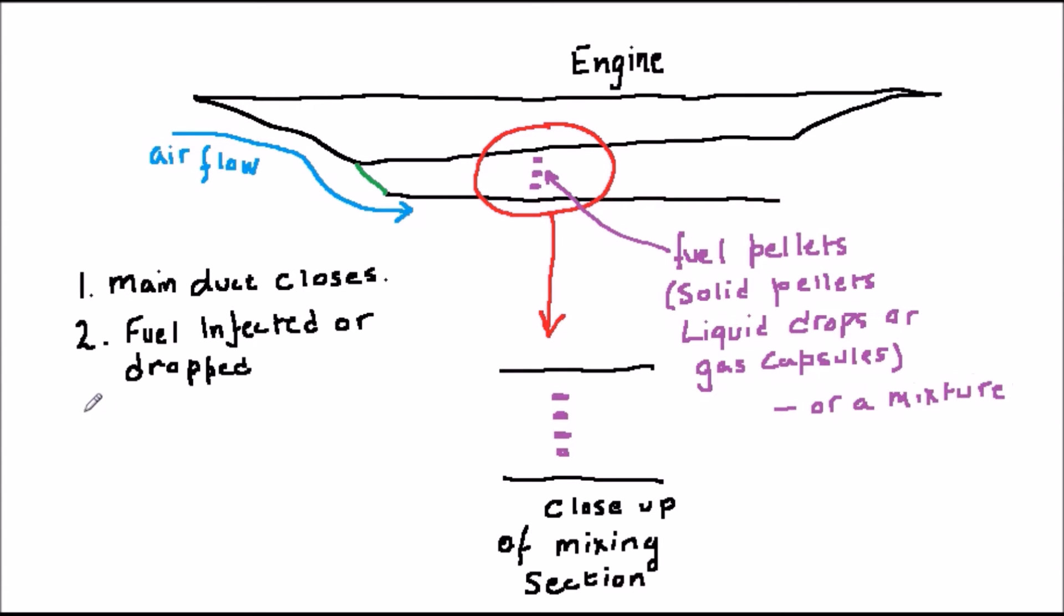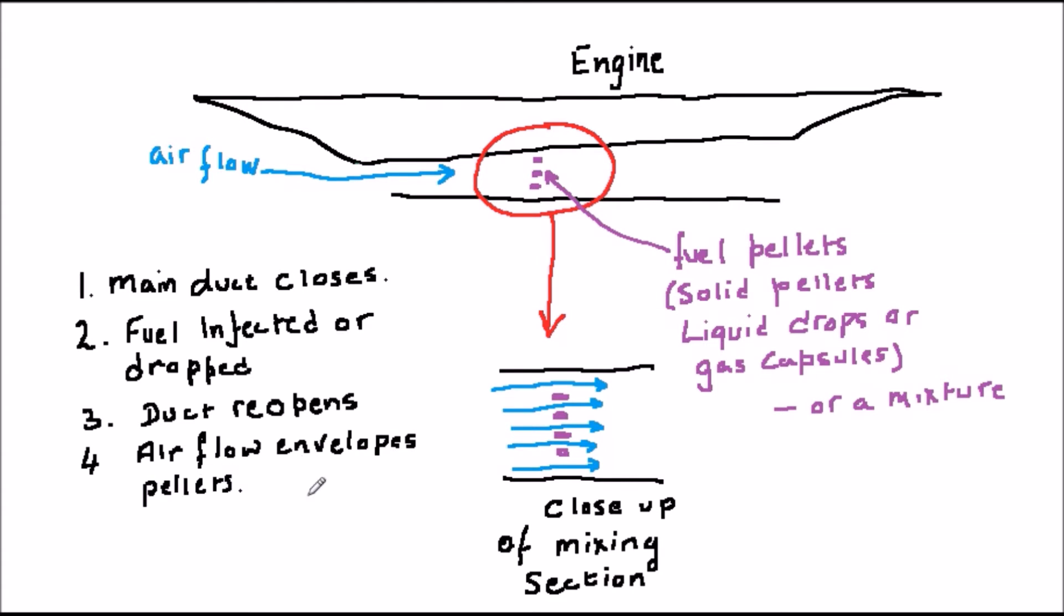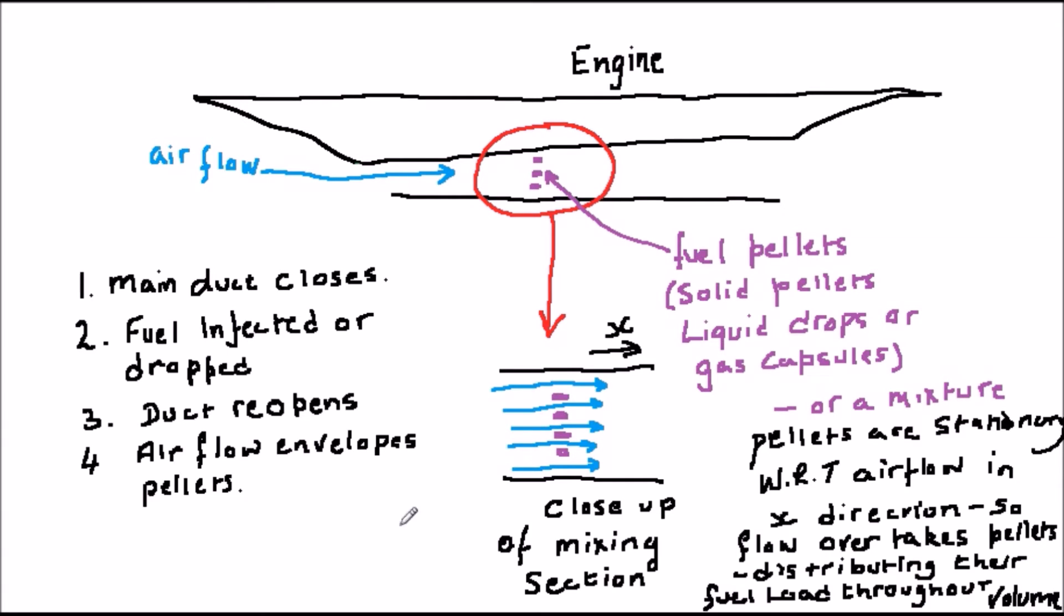The duct could then be opened back up to the air flow, and if this was done with the right timing so that the fuel was falling through the duct at the time, the flow would envelop the fuel and it would be distributed evenly through the mixing volume. Since the fuel has inertia and since it is initially not moving with respect to the air flow, it could be designed to penetrate the flow to a predetermined depth, thus solving the mixing problem.